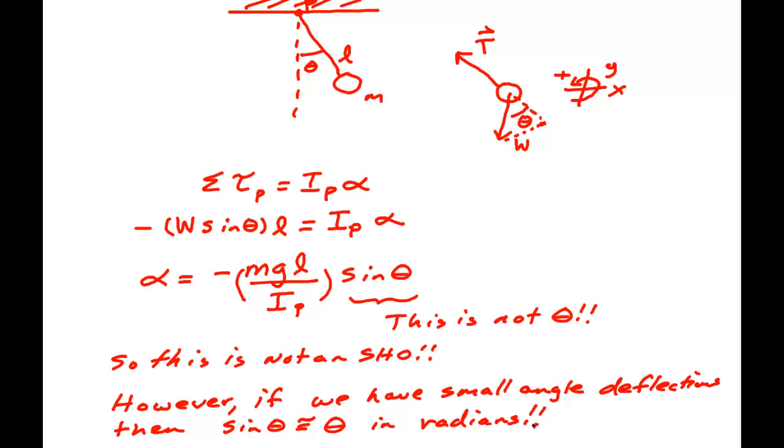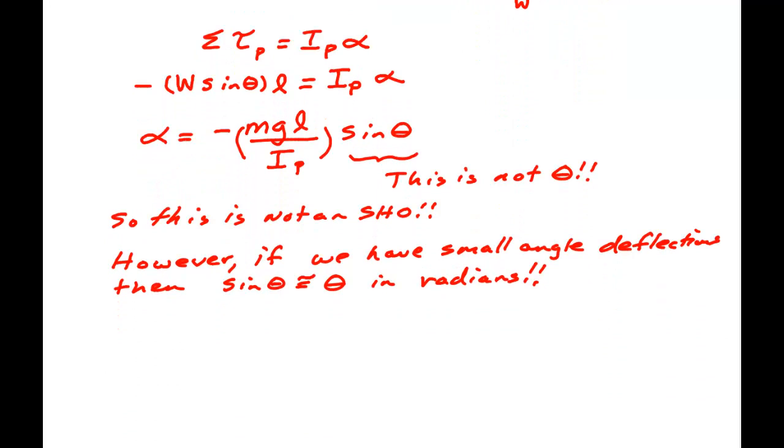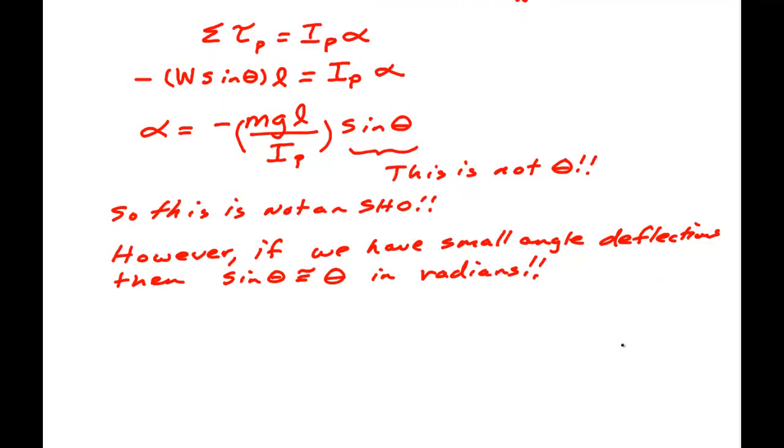One of those things that we know from trig. So that means that for small angles, alpha is approximately minus M G L over I_P times theta.